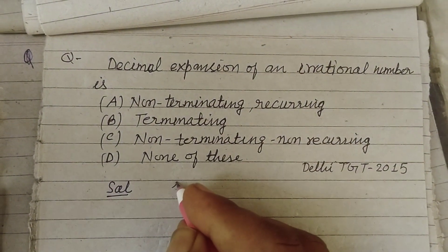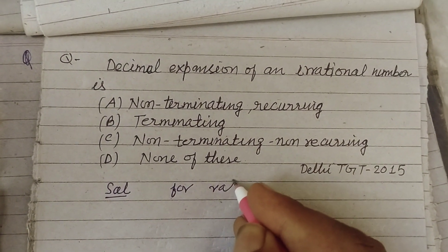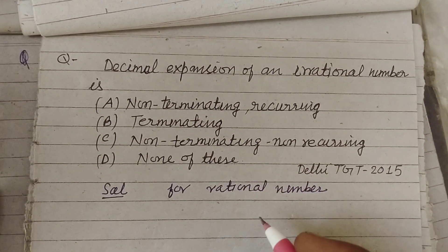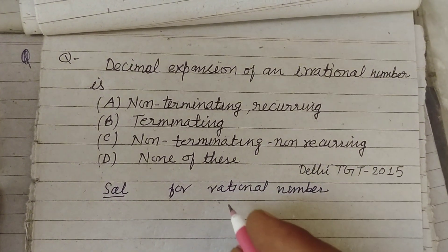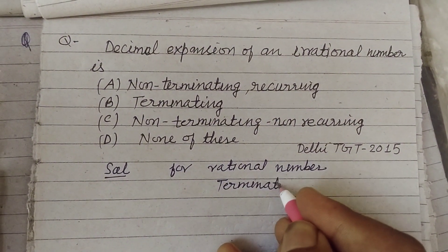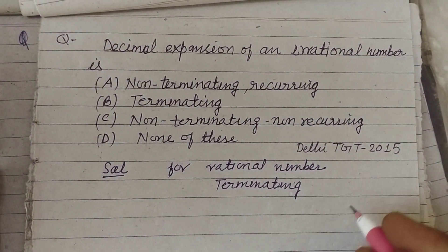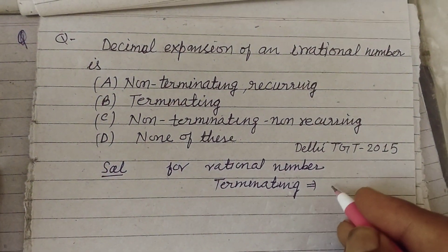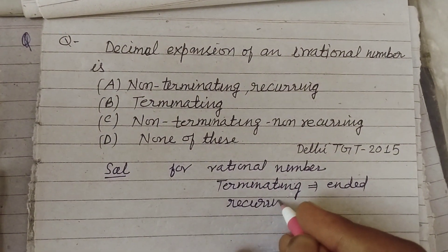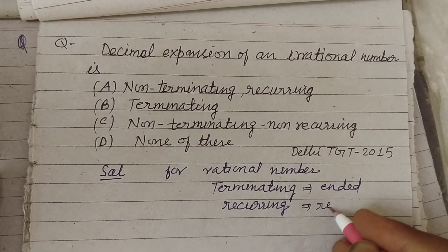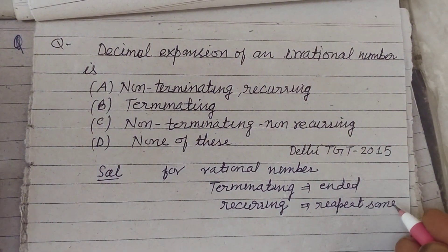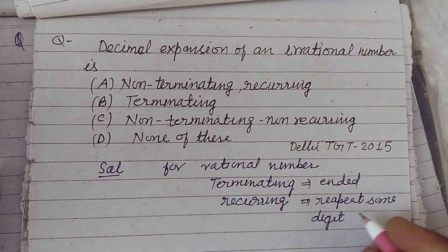So, first we discuss about rational numbers. If we make the decimal of a rational number, it will be terminating — ending after a few places — or recurring, repeating some digits regularly.